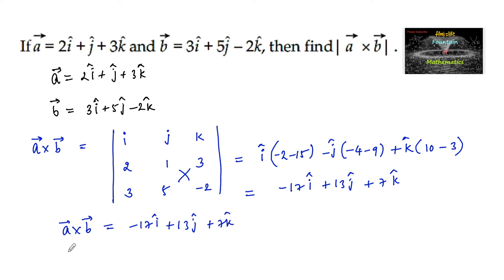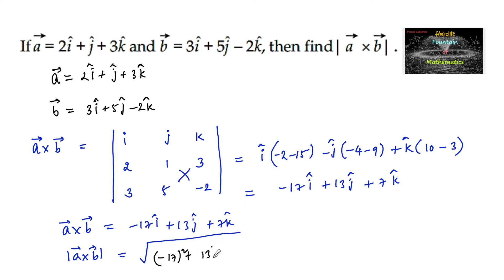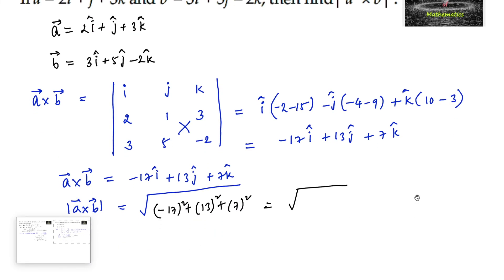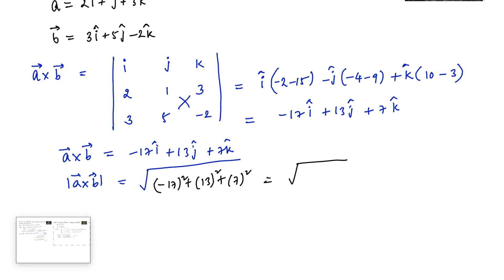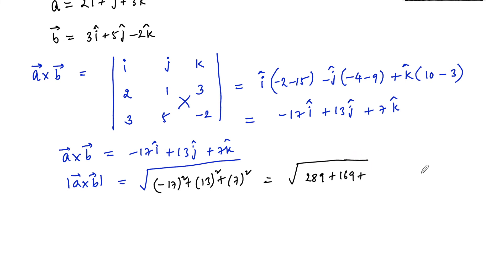Then mod of a cross b is equal to the square root of the sum of the squares of the scalar components, that is: root of (minus 17) whole square plus 13 square plus 7 square, which equals root of 289 plus 169 plus 49.